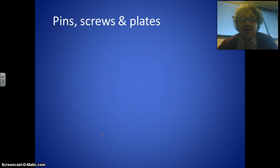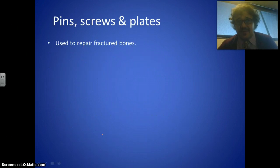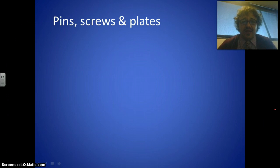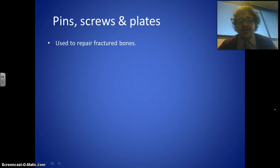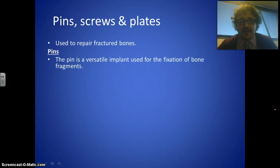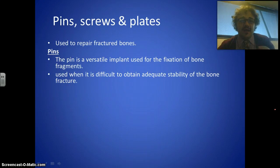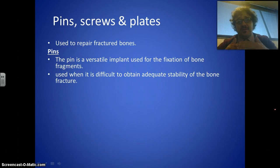The first application we'll look at is pins, screws, and plates. This is just an overview — we'll go more deeply into each area in future videos. Generally, pins, screws, and plates are used to help fracture bones heal. Pins are the most common and versatile implant, used to fix bone fragments together, since it's difficult to obtain stability in a fracture — if the bone keeps moving apart, you can pin them together.